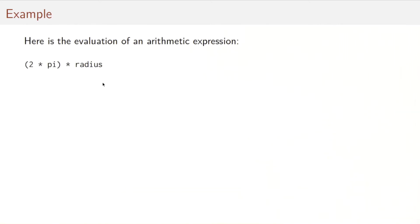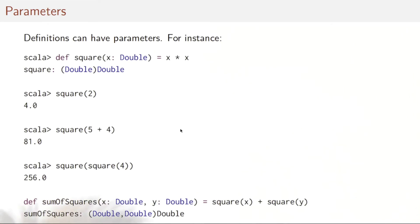So let's see an example. Here's the evaluation of the arithmetic expression two times pi times radius. First thing we do is we look up the name pi and we get its definition 3.14159. Then we perform the arithmetic operation on the left. Then we look up the radius, evaluate radius yielding 10. And finally, we perform the final multiplication yielding the result.